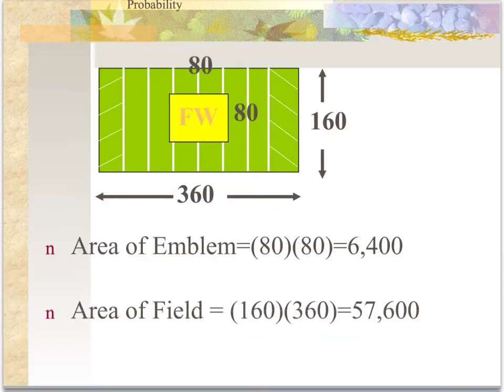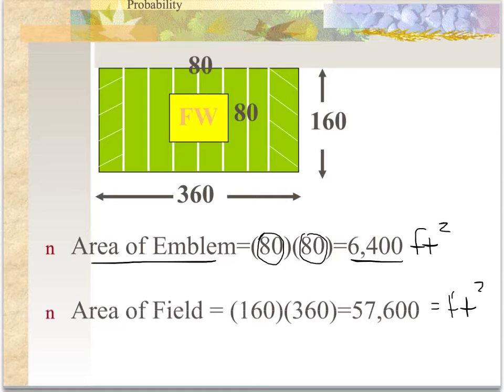Now according to our formula, we need the area of the shaded region and the area of the total region. The first thing I decided to do is find the area of my emblem. In this case, I took my 80, which is most likely feet, multiplied by my 80, and got 6,400 feet squared. Then I found the area of the entire football field, and that ends up being about 57,600 feet squared. So now I have the area of the two.